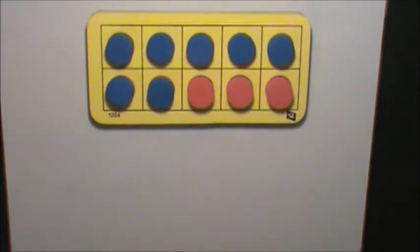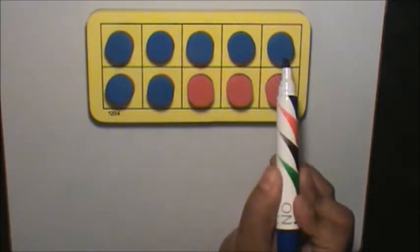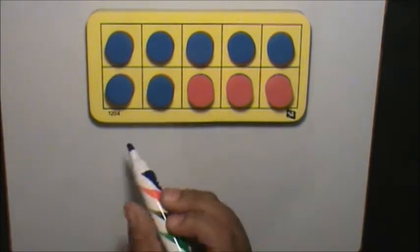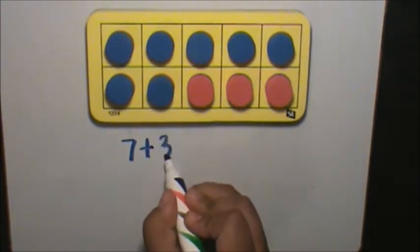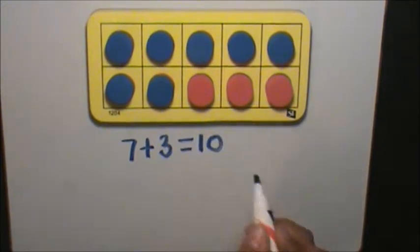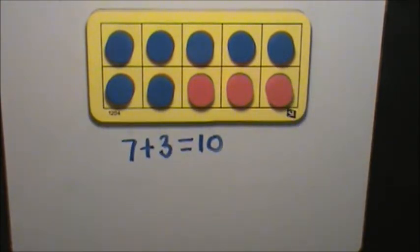Now, I will record the number sentences that equal 10. Five, six, seven plus 3 equals 10. And I know that it's 10 because my whole 10-frame is full.